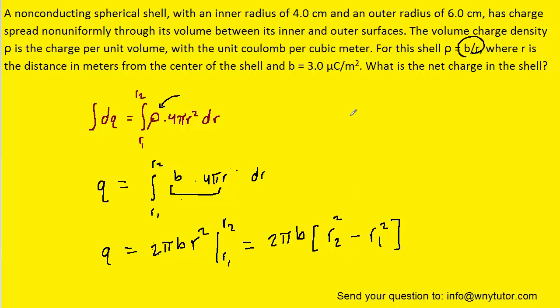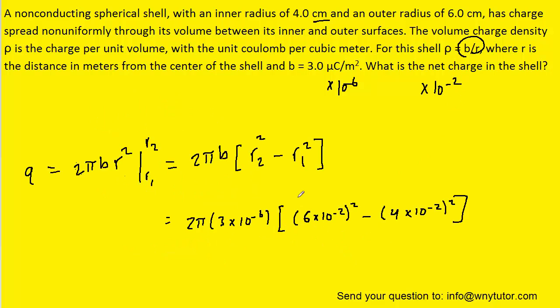And then all we have to do at this point is plug in the known values. Note that b was given in a non-standard unit of micro coulombs, so we'll have to multiply it by 10 to the minus 6. Also, the radii were given in centimeters, so we'll have to multiply those by 10 to the minus 2. And when you calculate that, you should get a value of approximately 3.8 times 10 to the minus 8th coulombs.